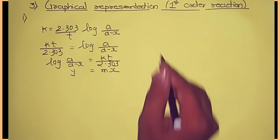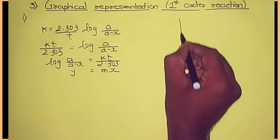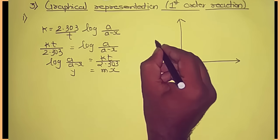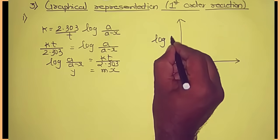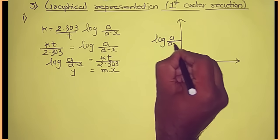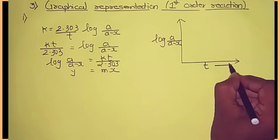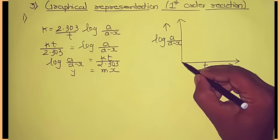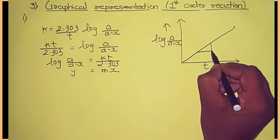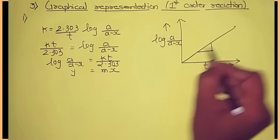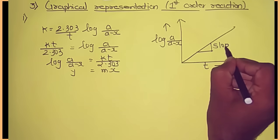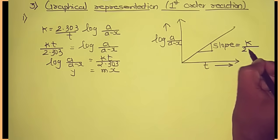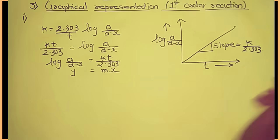If we plot a graph of log of a upon a minus x versus t, it will be a straight line passing through origin, because y equals mx represents a line passing through origin. The slope of that line will be k upon 2.303.